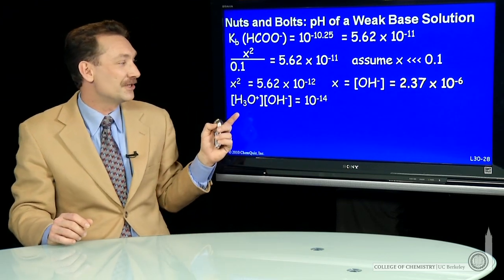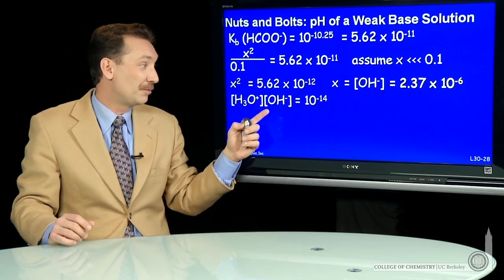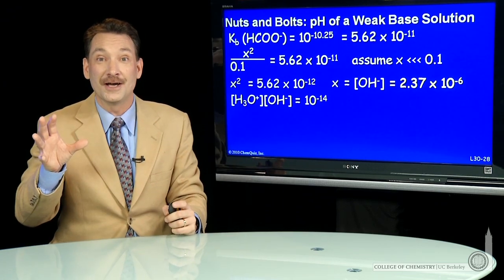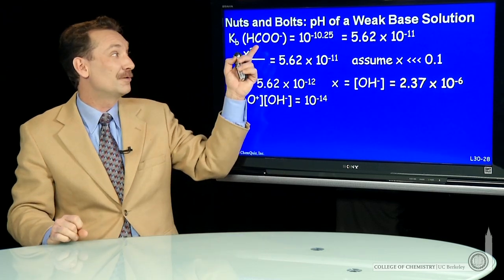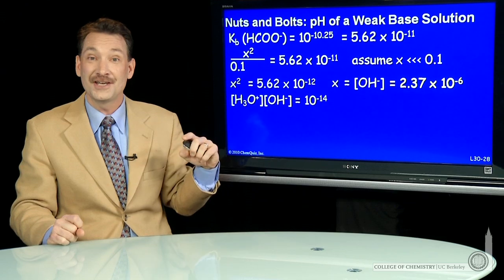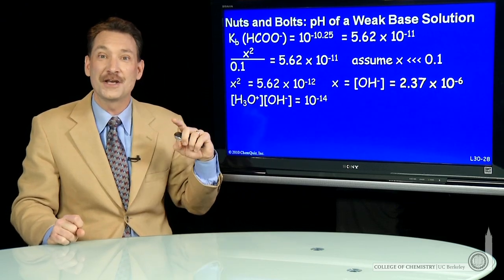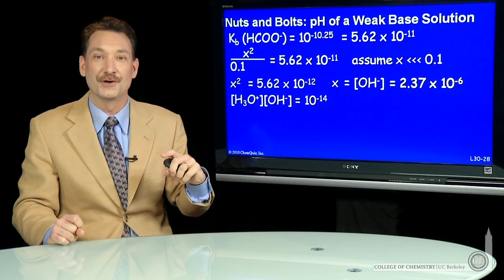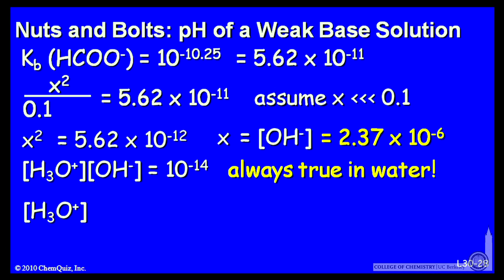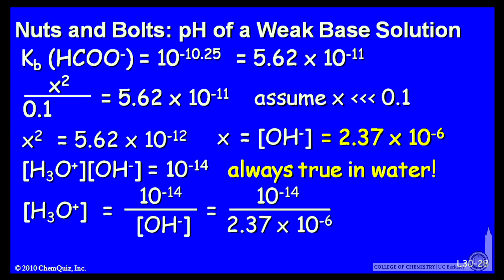I have the OH minus concentration. And in water, H3O plus times OH minus is always 10 to the minus 14. So we have two equilibria occurring simultaneously. The equilibria that produces this OH minus and the water auto ionization equilibrium, which holds H3O plus and OH minus product at 10 to the minus 14, allows me to solve for H3O plus. The H3O plus concentration, 10 to the minus 14, over this OH minus concentration that I just found. So H3O plus concentration is 4.21 times 10 to the minus 9.